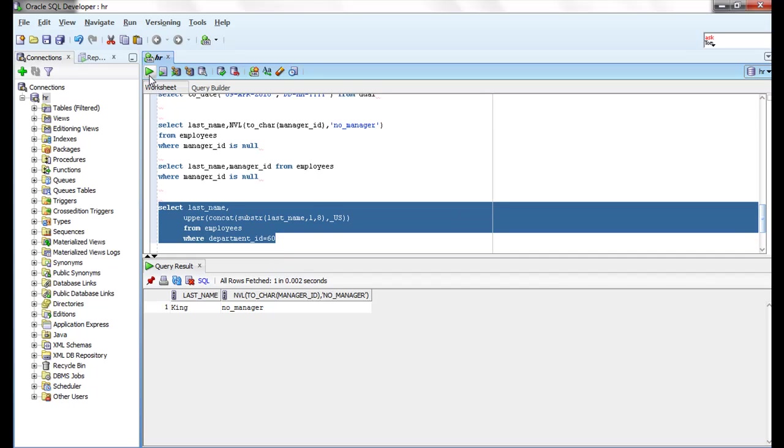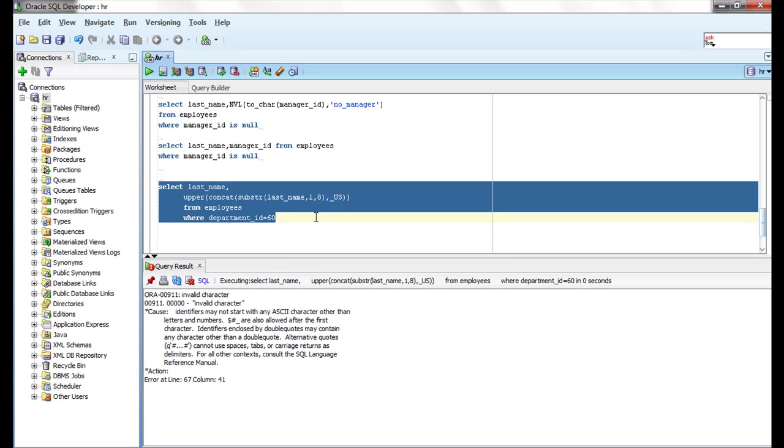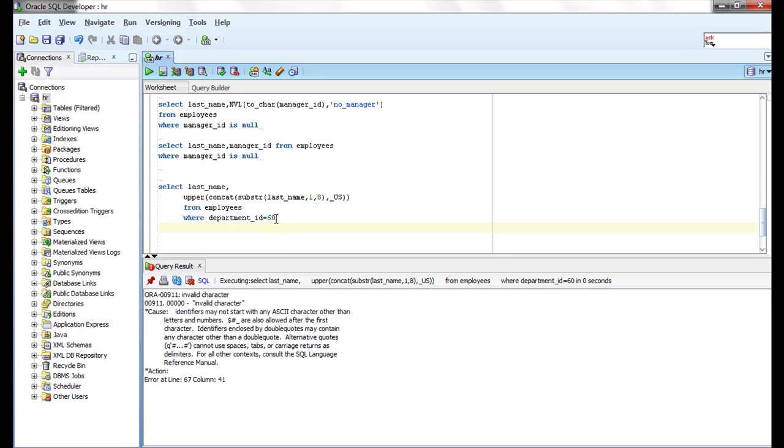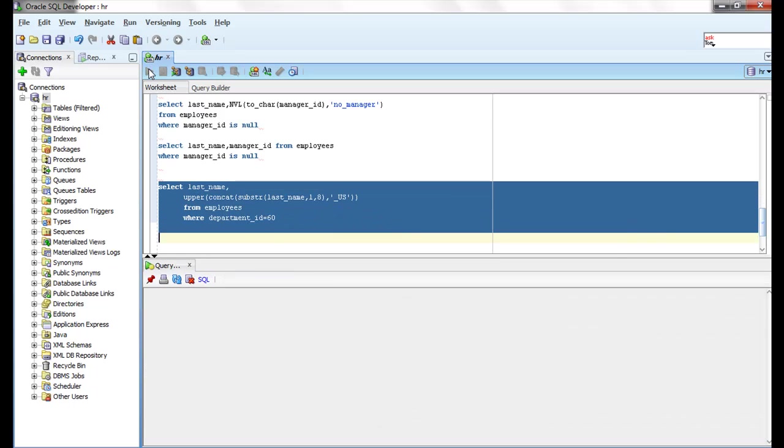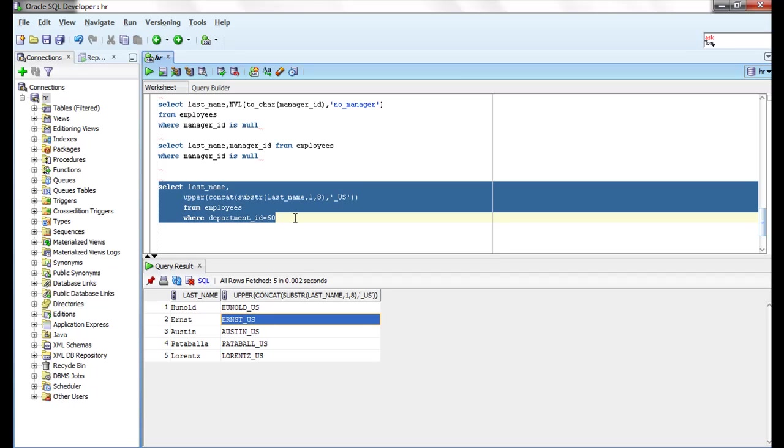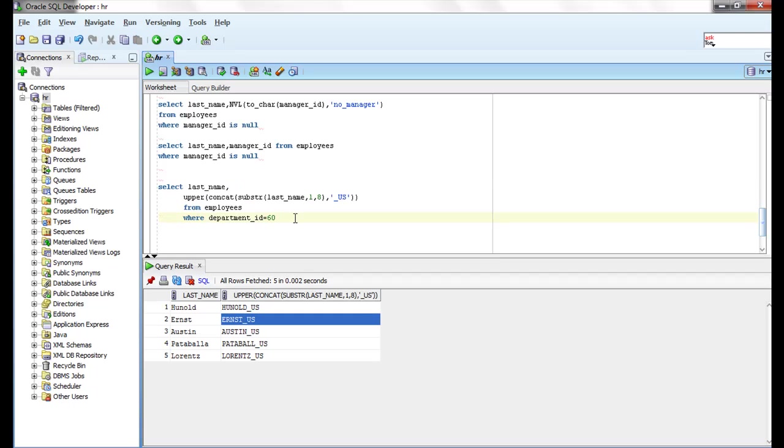What it does? Invalid character is saying. Why? You are not given a string in single quotes. This is the problem. What it does? First it takes first eight characters of last name, concatenation underscore US to that, and it converts to uppercase.